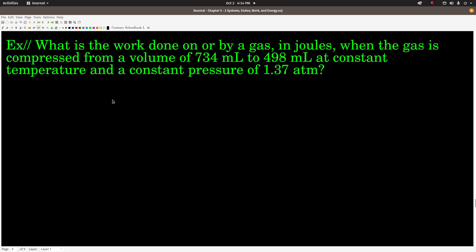So those are some units. Let's do an example. The question is: what is the work done on or by a gas in joules when the gas is compressed from a volume of 734 milliliters to 498 milliliters at constant temperature and a constant pressure of 1.37 atmospheres? Real quick, the only reason I mentioned constant temperature is because if the temperature changed, then things will get more complicated. We don't want to deal with that right now. So use that equation: w equals negative P delta V. Why don't you go ahead and work that out real quick. When you get an answer, come on back.